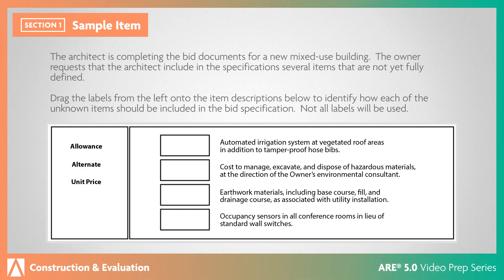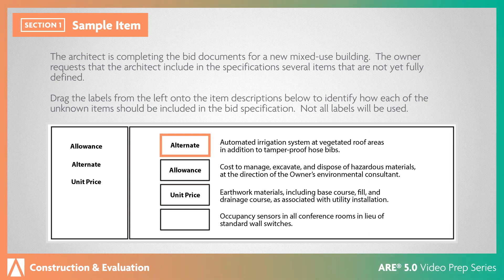Not all labels will be used. According to the Project Resource Manual's CSI Manual of Practice, allowances and unit prices allow the architect to incorporate into the contract documents information that can't be fully specified or drawn. Alternates, on the other hand, are a way to price options so the owner can finalize the scope of work after evaluating the bids. In this case, the hazardous materials cost is an allowance because the full cost is unknown at the time of bidding, but the work needs to be included in the project. The earthwork cost is a unit price because the basic scope is understood, but the extent of the work is unknown. The irrigation system and occupancy sensors are both alternates because they are in addition to, or in lieu of, other parts of the work.